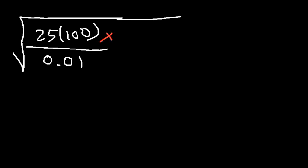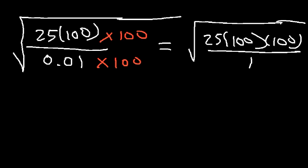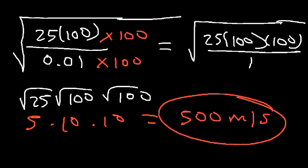We multiply the top and the bottom by 100. The reason is that 100 times 0.01 is 1, so we just get a 1 on the bottom. We have 25 times 100 times 100 on top. We can separate that into the square root of 25 times the square root of 100 times the square root of 100, which gives 5 times 10 times 10. So the root mean square velocity of argon is approximately 500 meters per second. You can type this into your calculator and get an answer close to 500 — maybe 499.9. So now you know how to calculate it without a calculator when the numbers are nice.